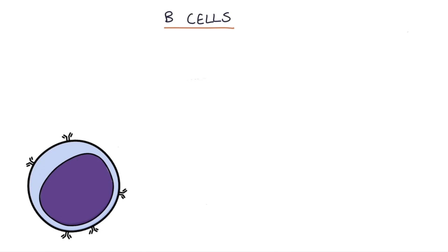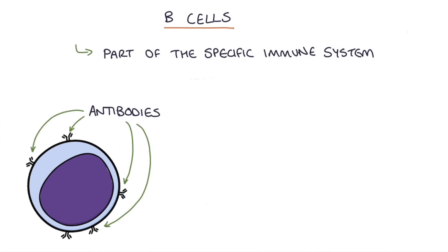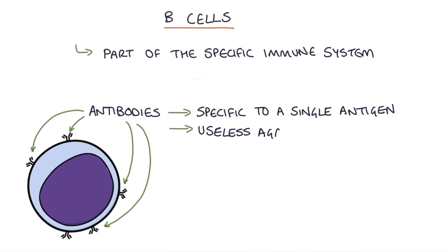B cells are a very important part of the specific immune system. B cells have antibodies on their surface membrane, and each B cell has antibodies that are specific to a single antigen, and they're useless against all other antigens.